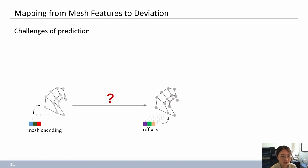After mesh encoding, the next step is inputting features to the network. There are some challenges for training models to realize this approximation.